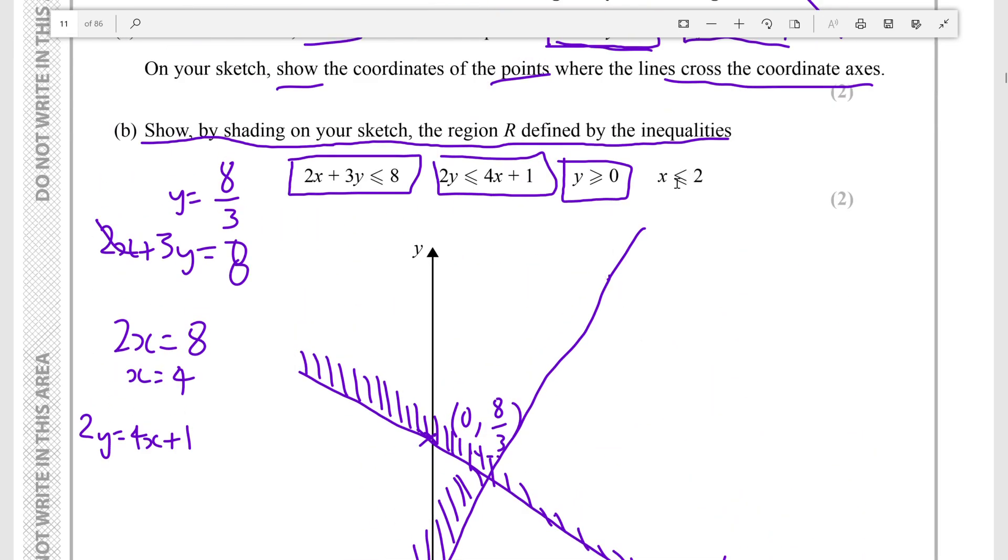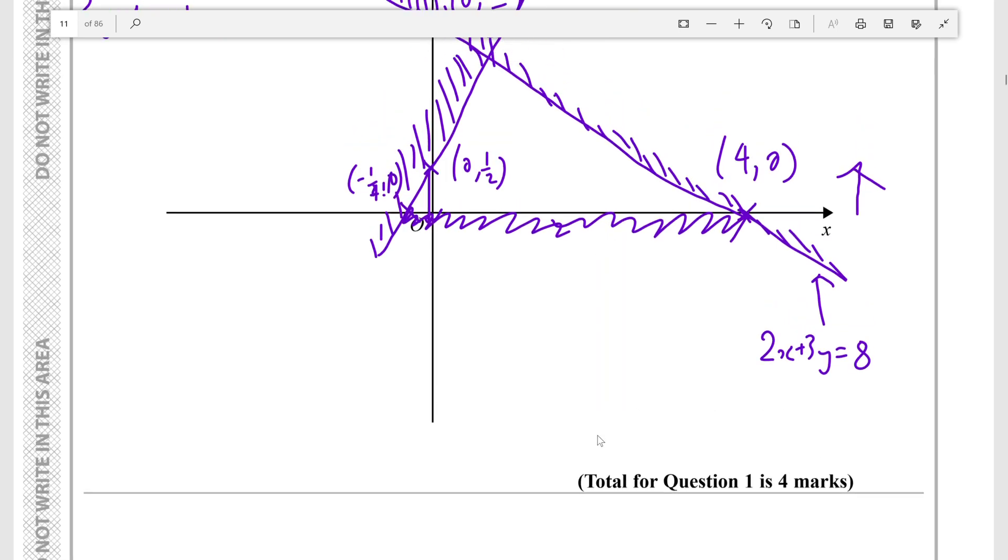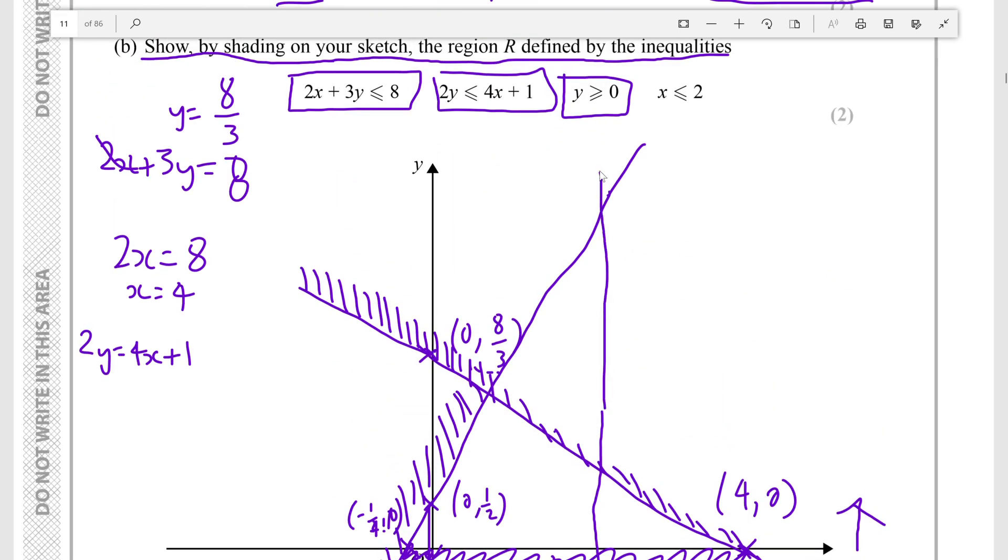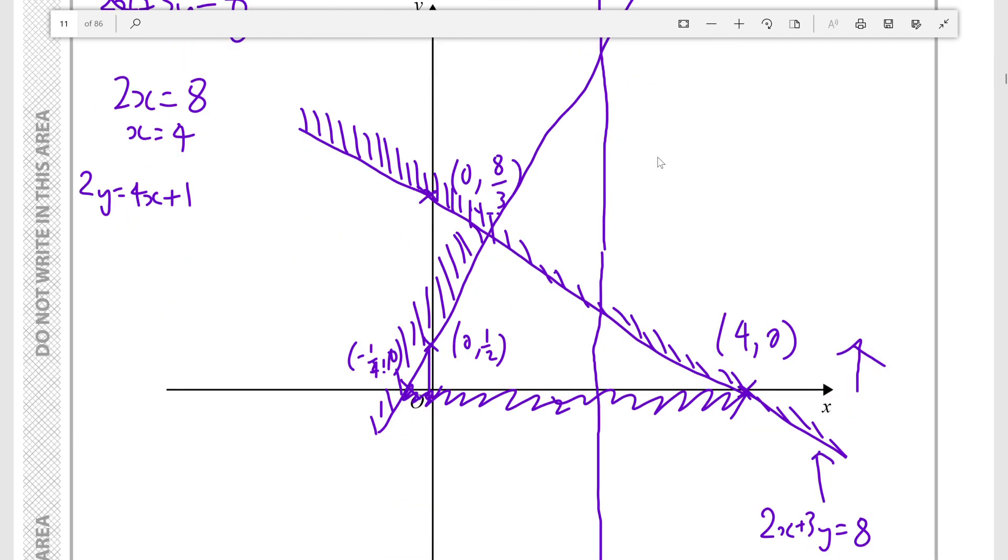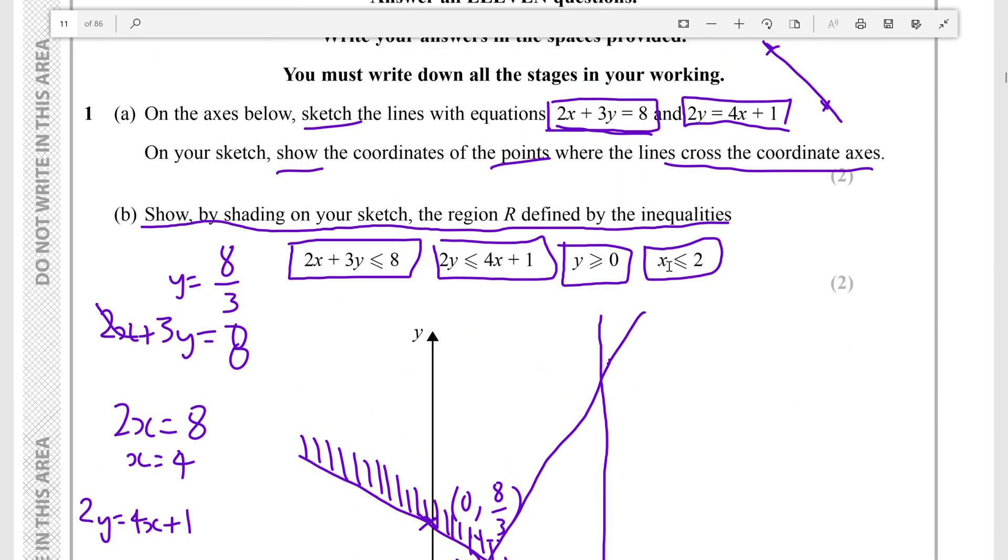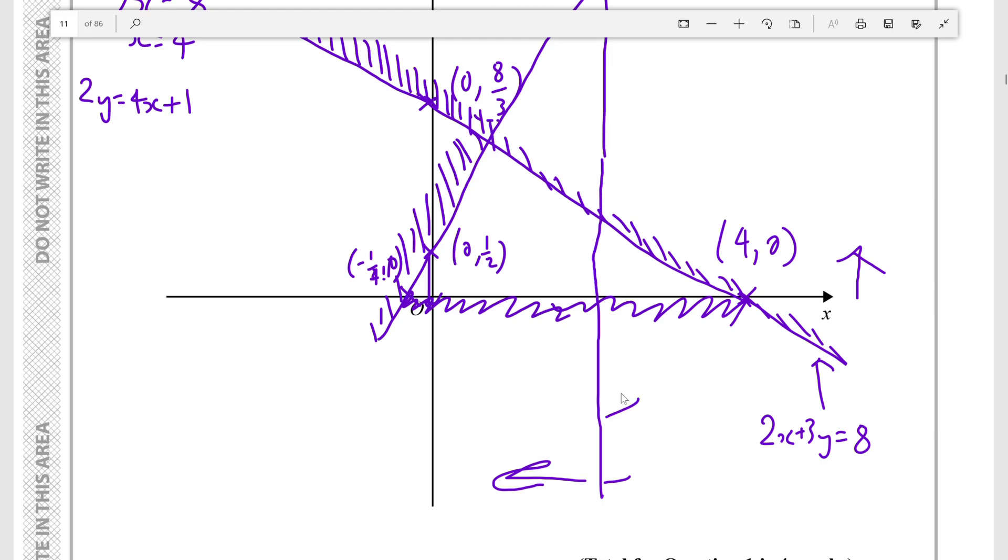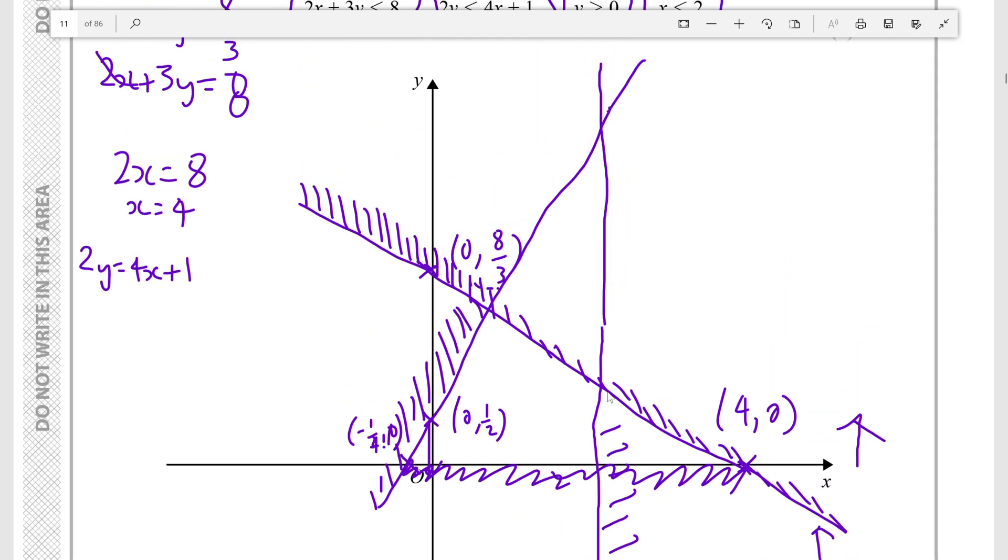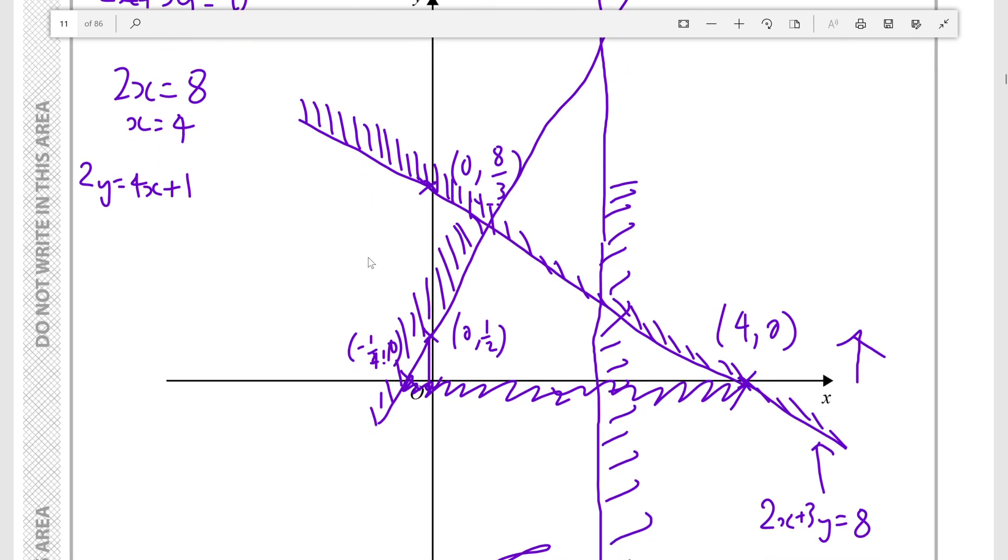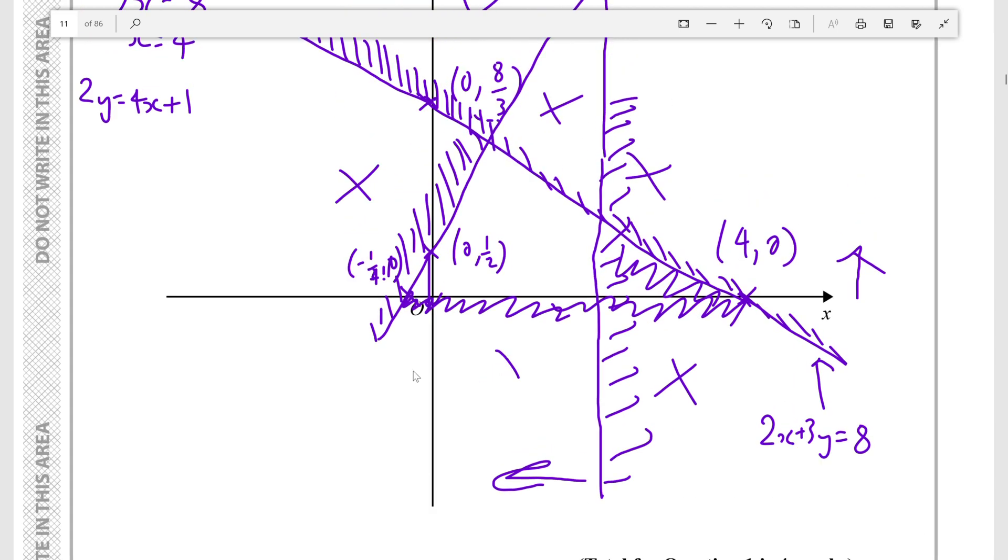And then finally x must be less than or equal to 2, so we draw the line x is equal to 2, which is going to be around here. And x must be less than or equal to 2 so it must be on this side, so this side is invalid.